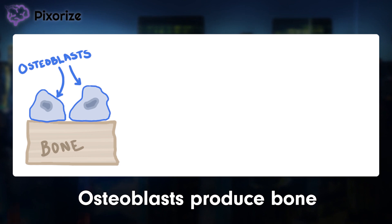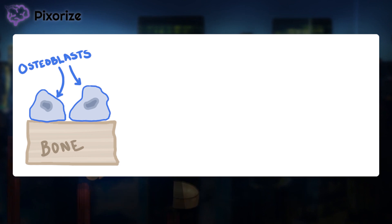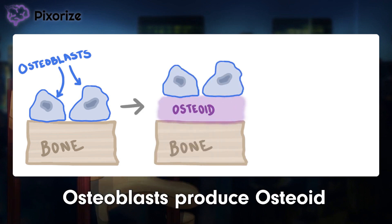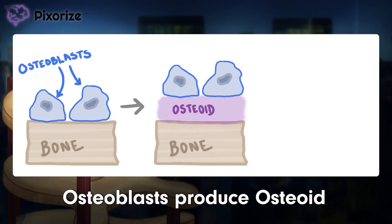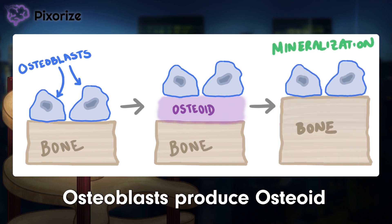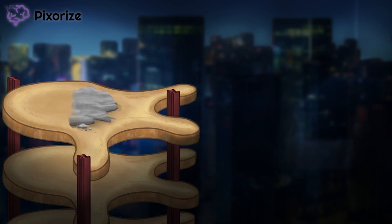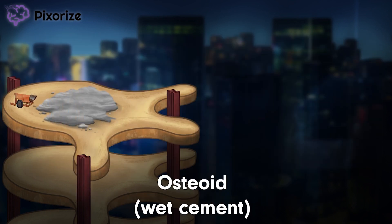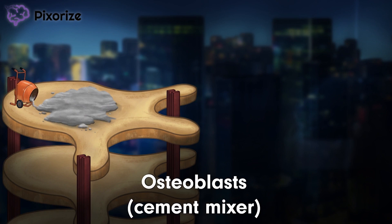Let's start with a bit of review. Recall from physiology that osteoblasts are the cells that produce bone. More specifically, they produce a substance called osteoid, and that osteoid is later mineralized into mature bone. At Pixerize, we use wet cement to represent osteoid, so cement mixers therefore represent osteoblasts.